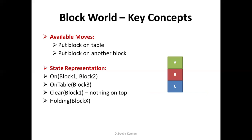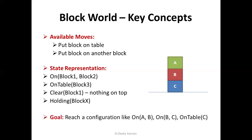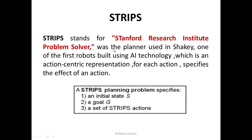If you say present state, you can combine all these. You can define initial state and goal state. So in this example: A is on the table with C below, which means B is on C, on(B, C), which means A is on B. This is the representation.